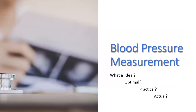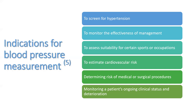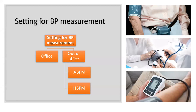We measure blood pressure to screen for hypertension, to monitor effectiveness of management, to estimate cardiovascular risk, and to determine risk of medical or surgical procedures, as well as monitor ongoing clinical status. In primary care, blood pressure can be measured in the office or out of office — out-of-office measurement includes ambulatory blood pressure monitoring or home blood pressure monitoring.